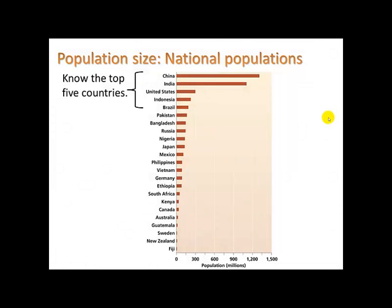Things like population size — here is a list of the top most populated countries, and you need to know the top five: China, India, US, Indonesia, and Brazil.